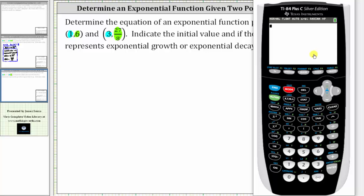And now we need to perform exponential regression. We press stat, right arrow once to calculate. Exponential regression is option zero. So if we scroll past nine at the bottom, notice option zero is ExpReg, which is exponential regression.